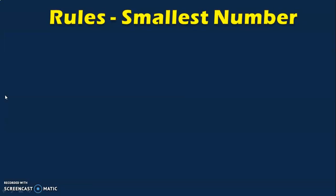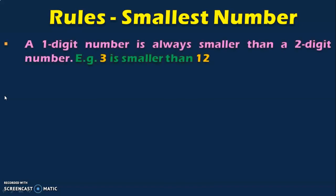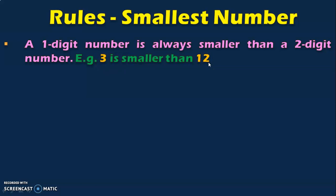The first task is to identify the smallest number. To identify the smallest number among a set of numbers, there are certain rules we need to follow. The first rule is: a one-digit number is always smaller than a two-digit number. For example, 3 is a one-digit number and 12 is a two-digit number. A one-digit number is always smaller than a two-digit number — this is the first rule to remember.